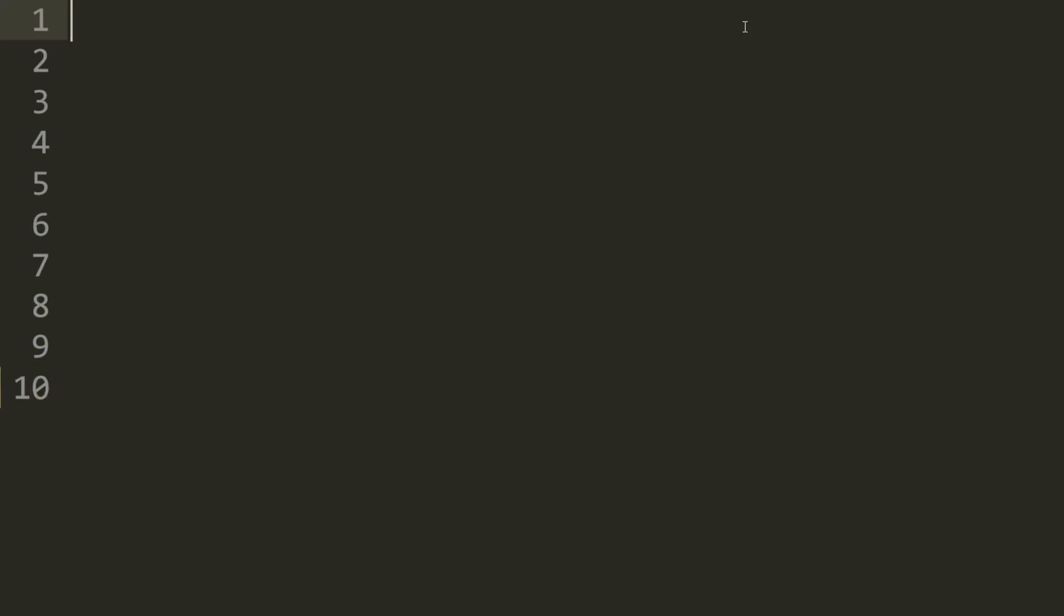Let's write the code for our recursive length function. So we define the length function, which takes in a list. And then we need to return length 2 with the list and something to keep track with. So in this case, we keep track of the length using the number 0.